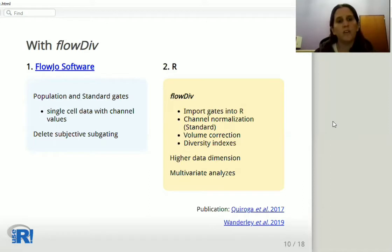With FlowDiv, we only need to generate the gates for the population and the standard. Here we delete the subjective subgating.